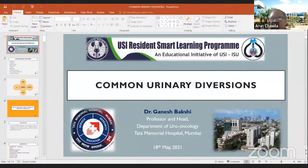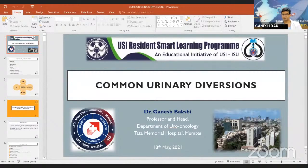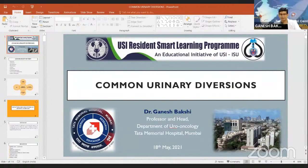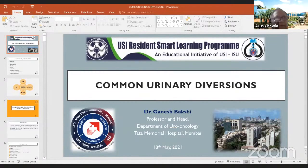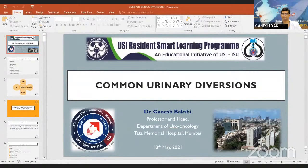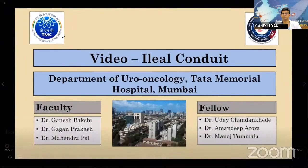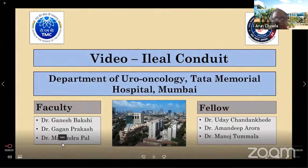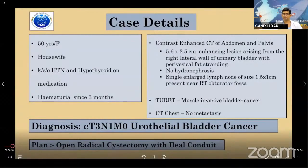Video — ileal conduit: this was a 50-year-old female with CT3 N1 M0 urothelial bladder cancer, planned for radical cystectomy with ileal conduit. The video starts after the cystectomy portion. We are isolating the bowel segment — the last 15 cm of terminal ileum is left because of a major blood vessel there. Conduit length further from the marking is usually 15-20 cm, tailored to the patient's body habitus, ensuring a good well-vascularized segment.